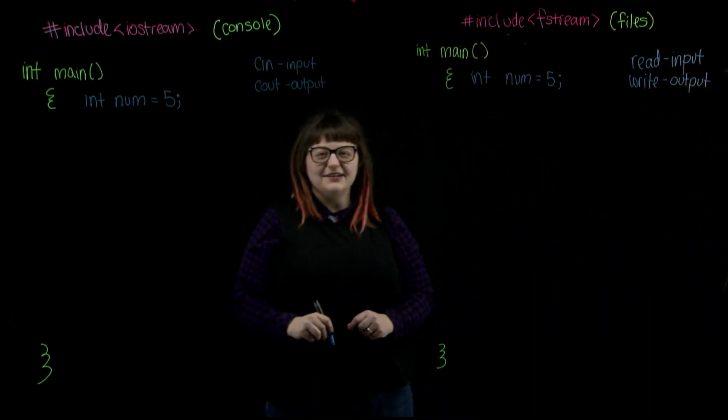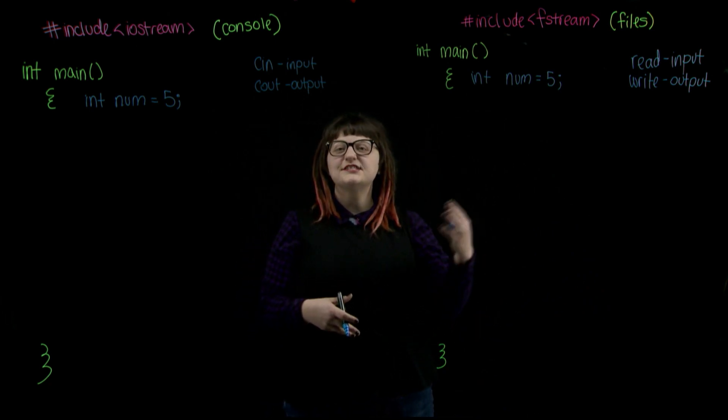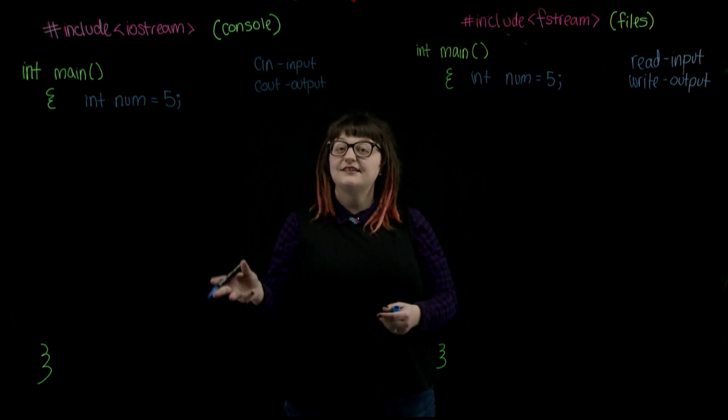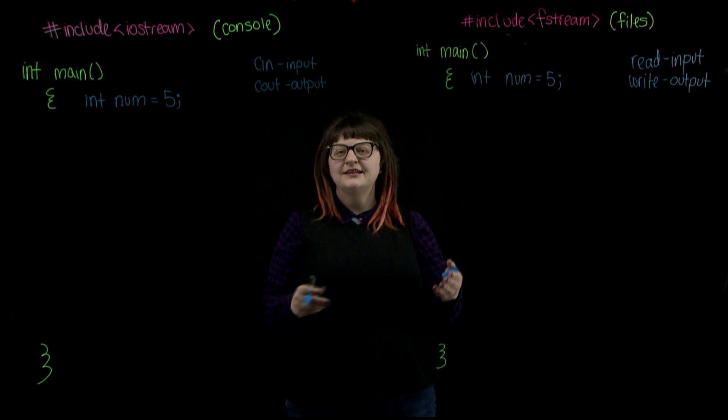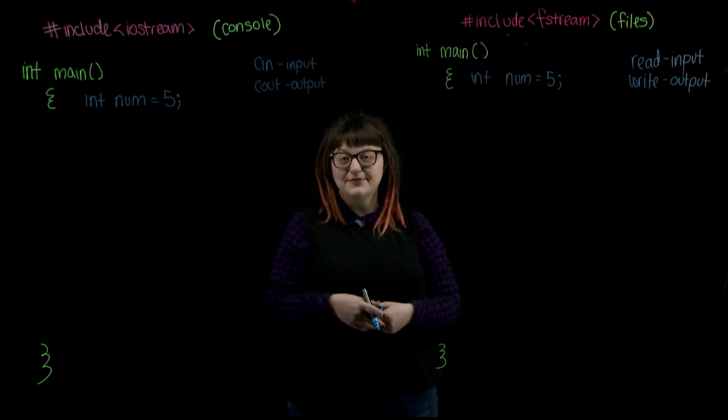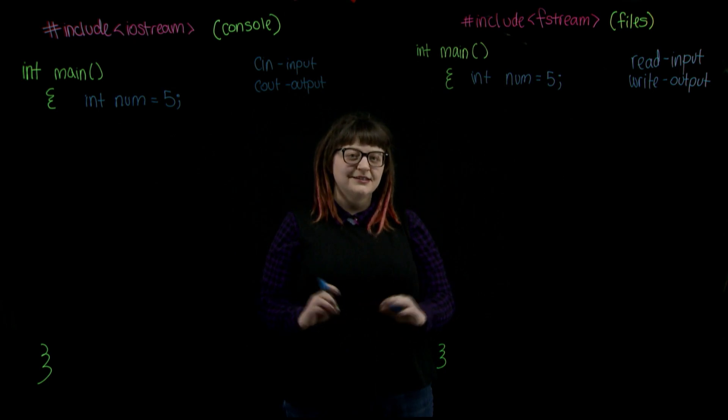When you read data from a file and into your program, it's considered a form of input. You're just getting the data from a file instead of the console. Writing to a file is going to be a form of output, but again, the console is just replaced by a file. Sounds simple enough, right? So where's the difference? Let's go through it.